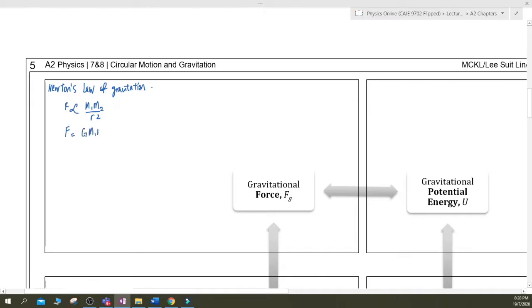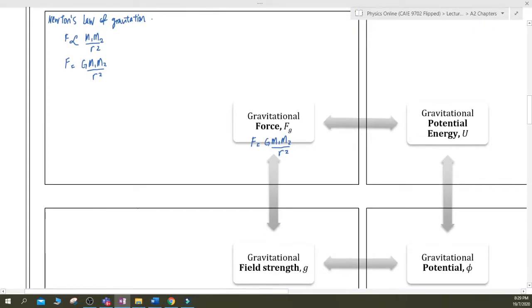So now to kick out the proportionality sign, you will insert the gravitational constant G. So I will write out the equation there for you, where you have the F is G M₁M₂ over r squared. This equation is not given to you.